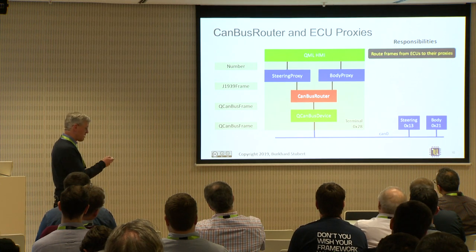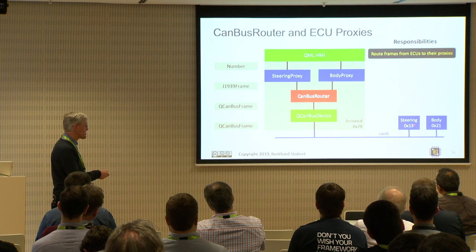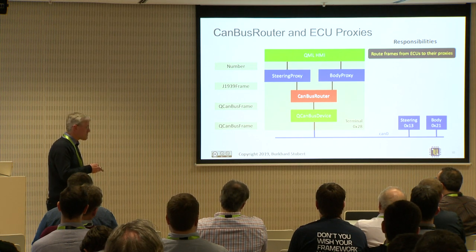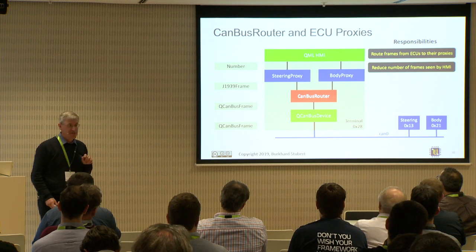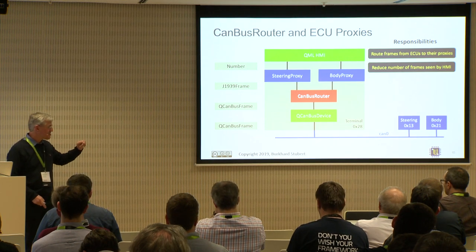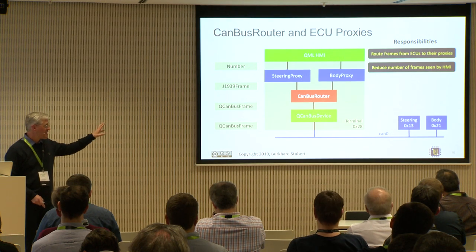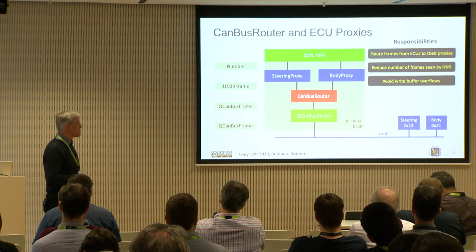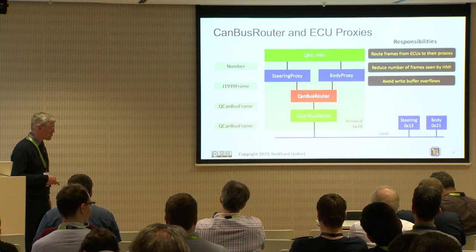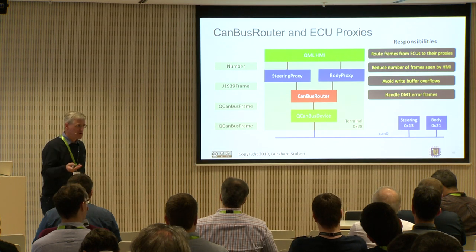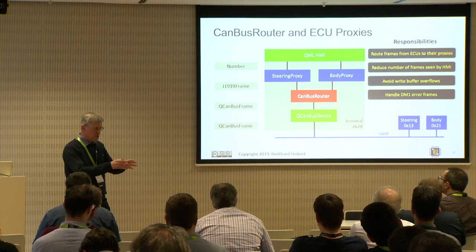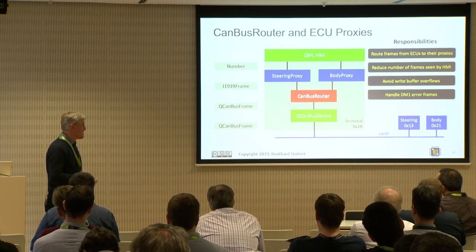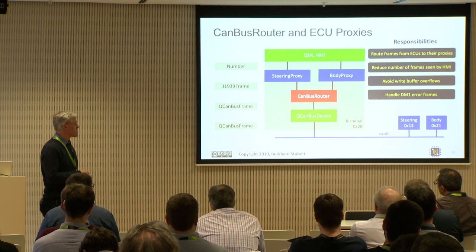The CAN bus router's responsibilities include routing messages from each ECU to its proxy and then to the HMI, reducing the number of frames seen by the HMI (to prevent freezing), avoiding write buffer overflows, and handling error frames. A firmware update writing 256 eight-byte frames consecutively will hit a write buffer overflow if not managed properly.